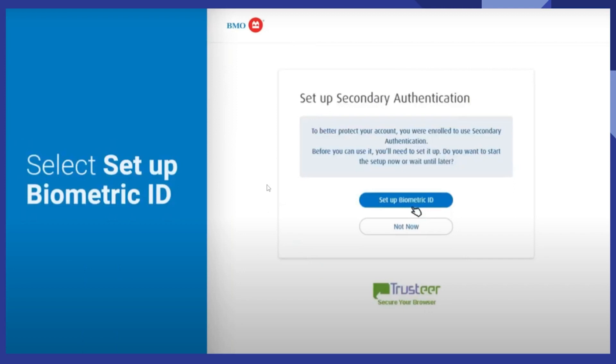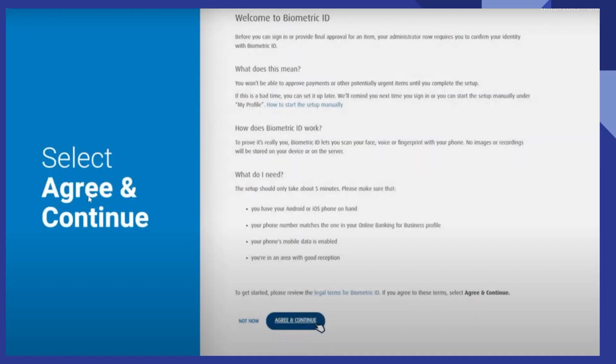Then select 'Set up biometric ID.' You can set up secondary authentication, so click to set up biometric ID. Now select 'Agree and continue.'